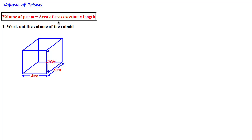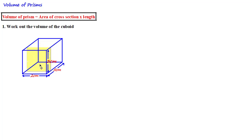Let's first understand what a cross-section is — the best way to do this is visually. Taking this cuboid for example, if we shade this face here, the cross-section of a prism is a flat face which goes all the way through the shape to the opposite parallel face without leaving any spaces around the edges. The length — which some people call the depth — is how far this cross-section goes along the shape until it reaches the opposite parallel face.